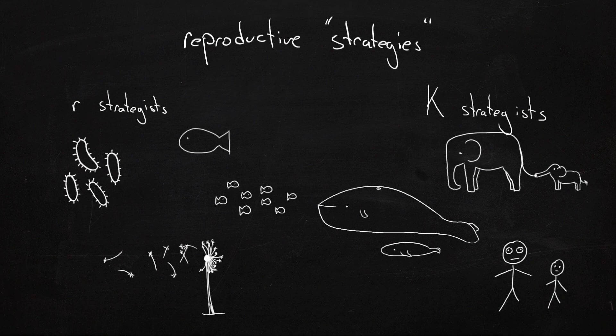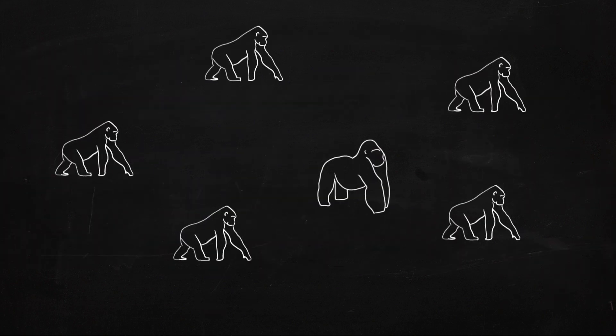These are just general categories that category making people make. There's lots of organisms that don't really fit the classification, and different genders can have different strategies.